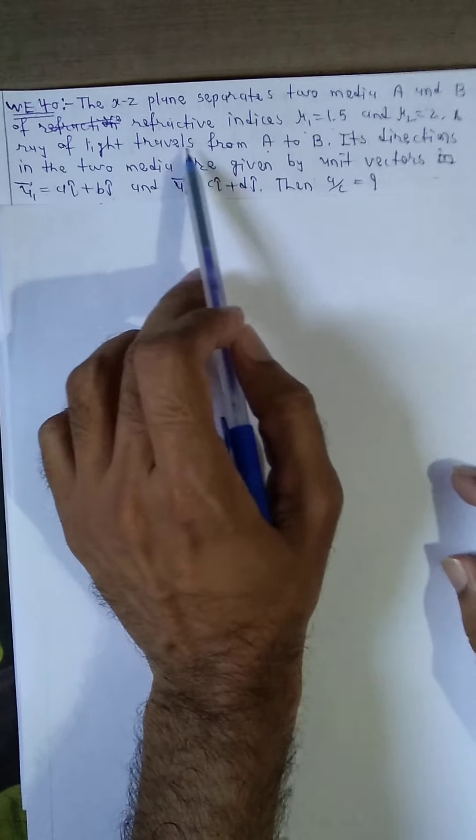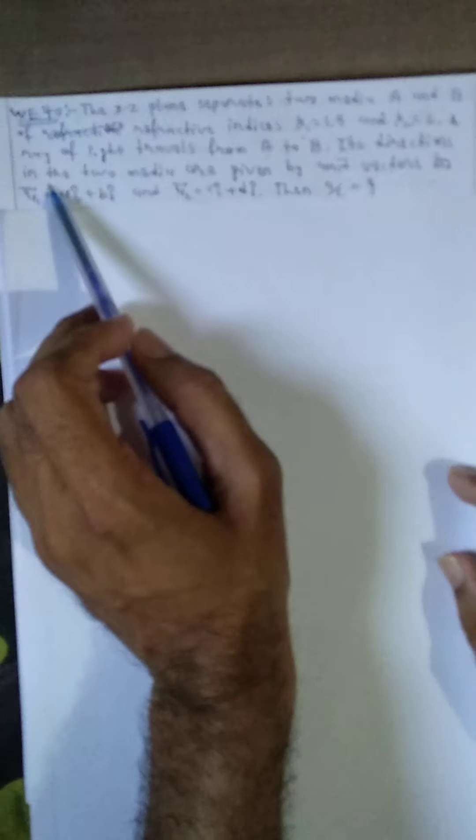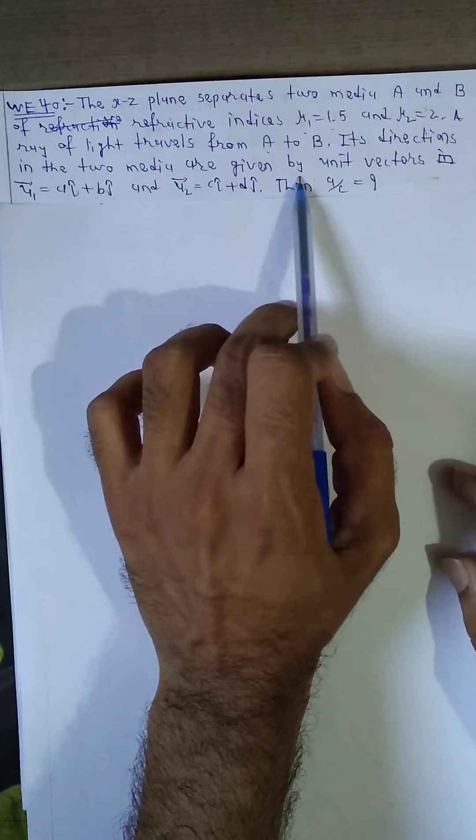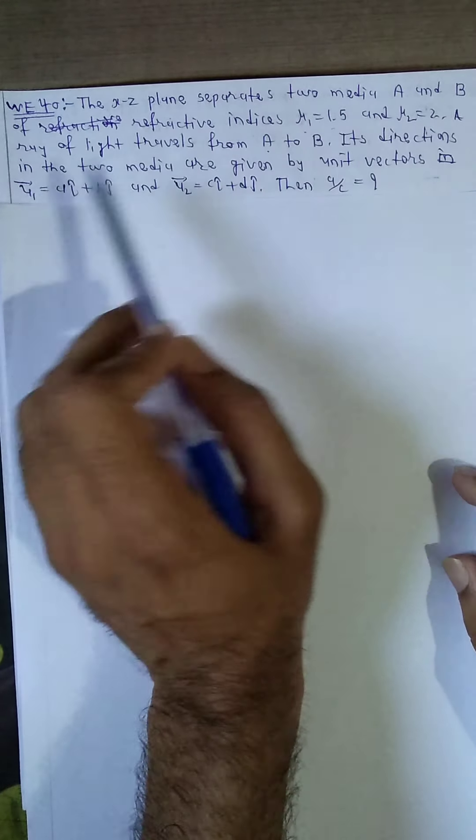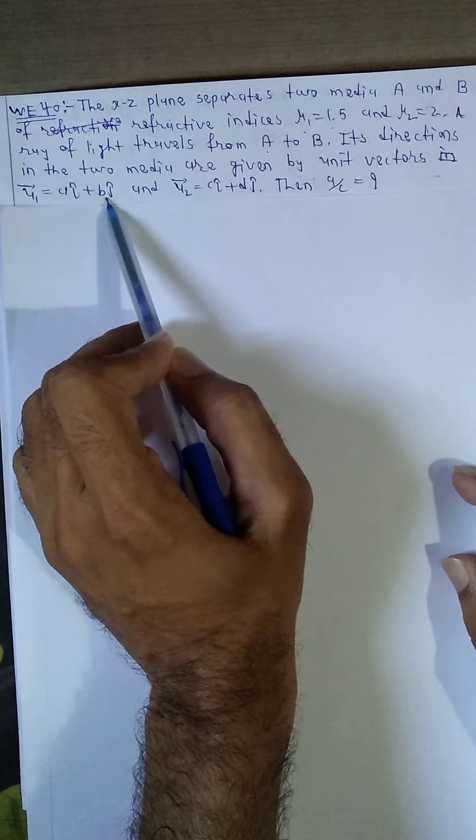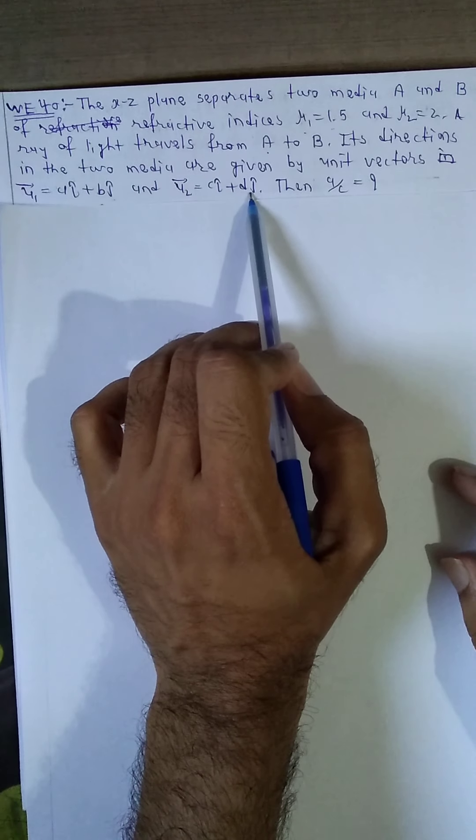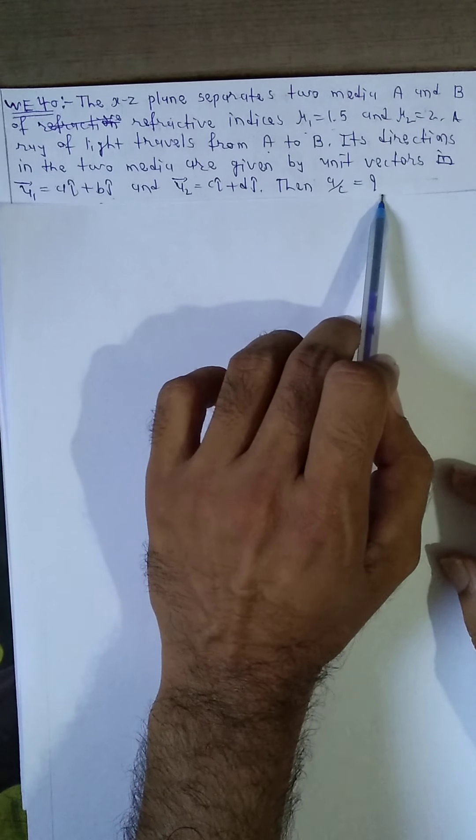A ray of light travels from A to B. Its direction in the two media are given by unit vectors u1 equals ai plus bj, u2 equals ci plus dj, then find a by c equal to.